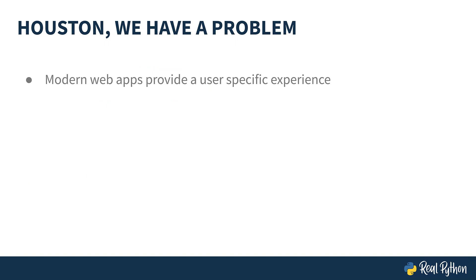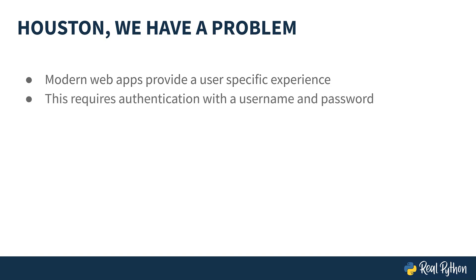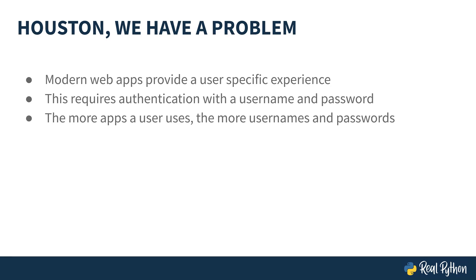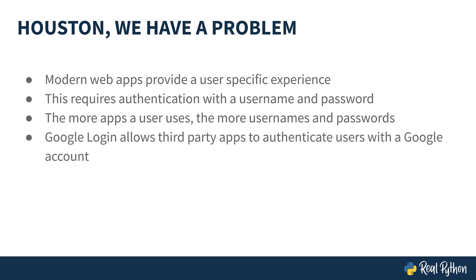On the modern web, many apps allow you to personalize your preferences or store data. To know what data or features to make available, the app will require users to log in, generally with a username and password. And as more and more apps depend on logins, the number of usernames and passwords a user has to manage becomes unbearable. This can be simplified by integrating Google Login with a web app. By leveraging Google Login, a user logs into their Google account credentials and gains access to the web app.